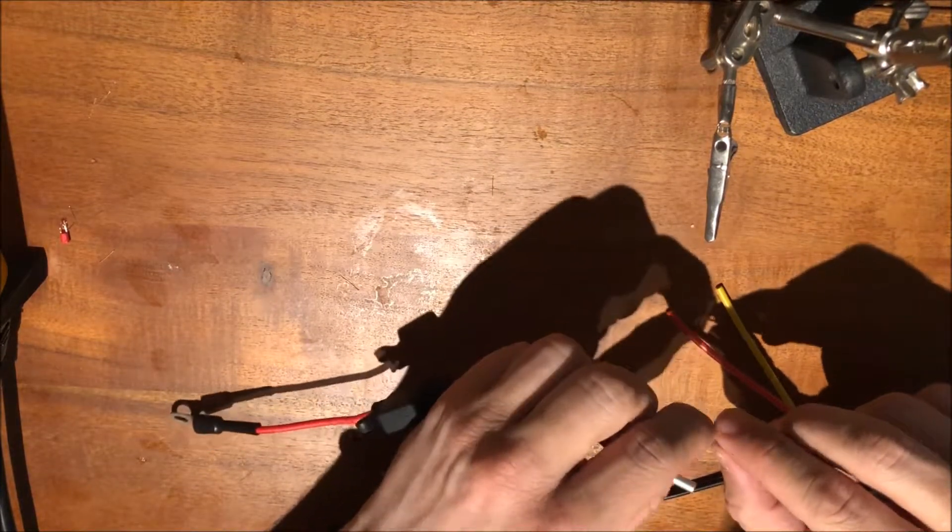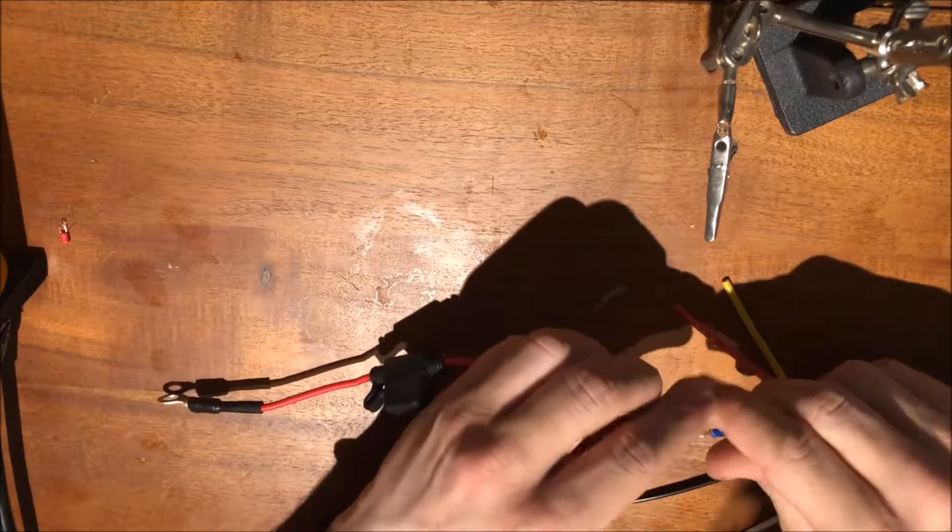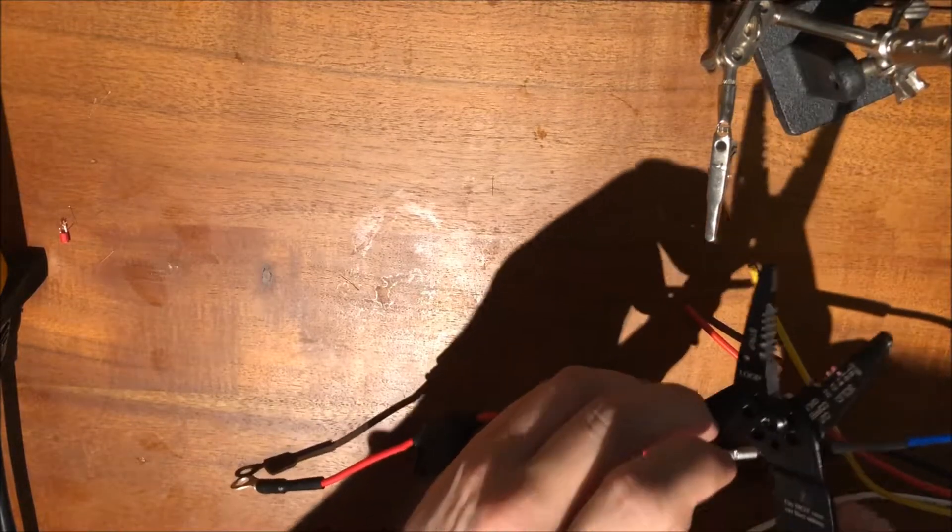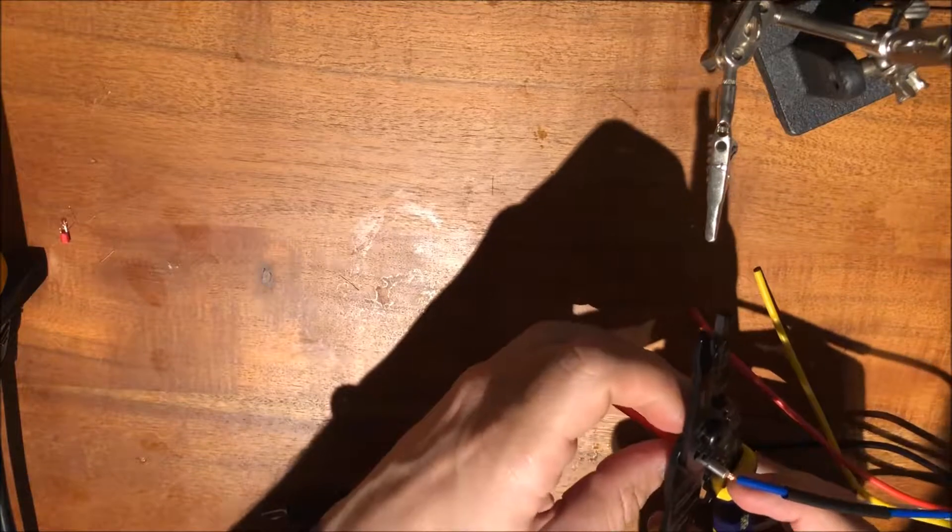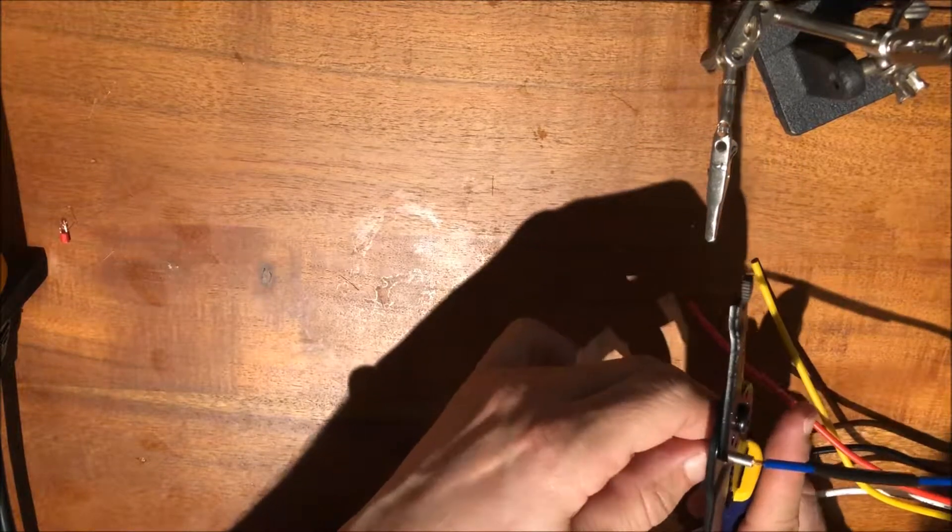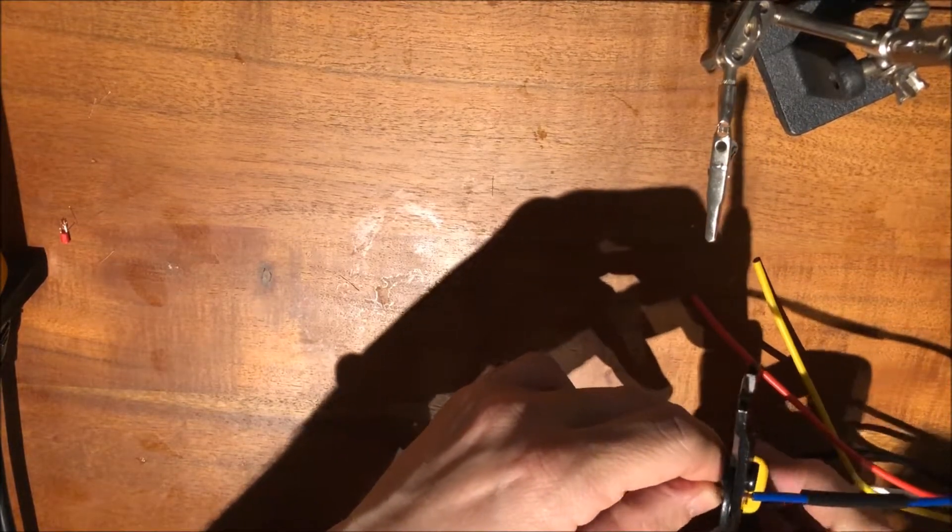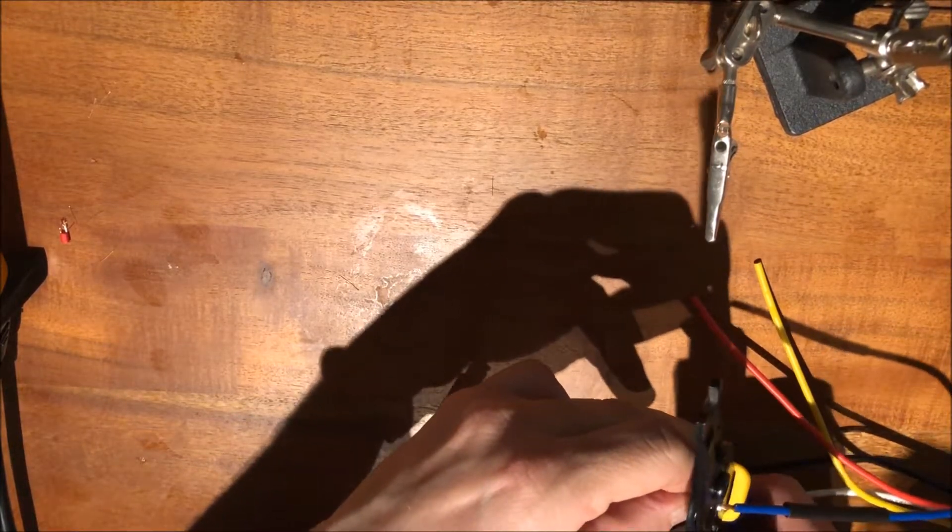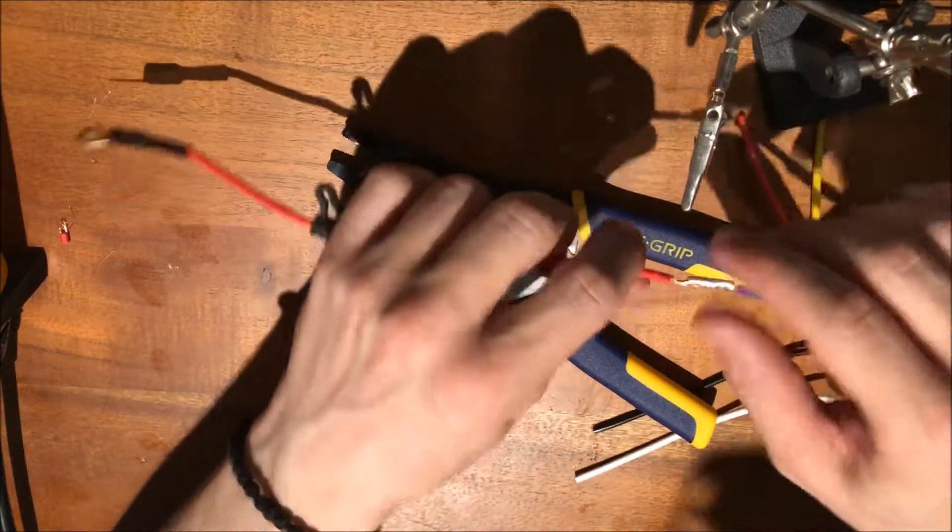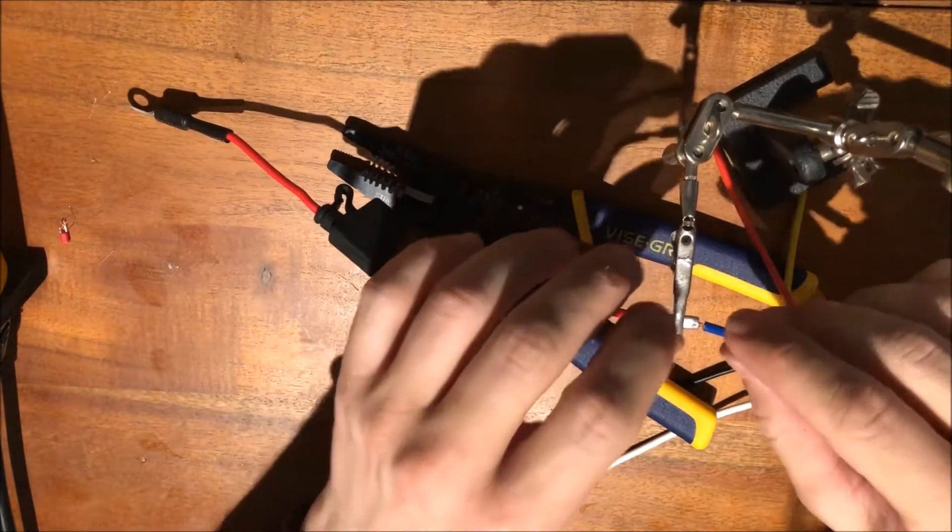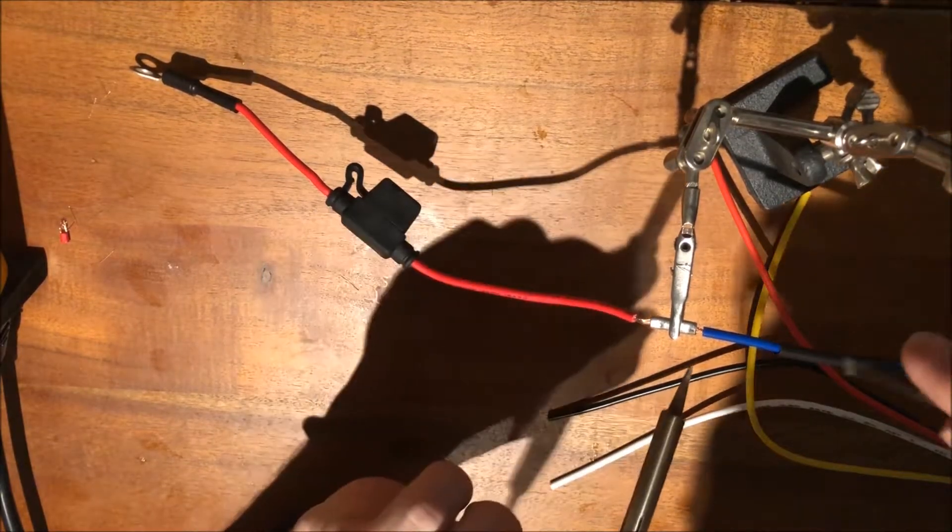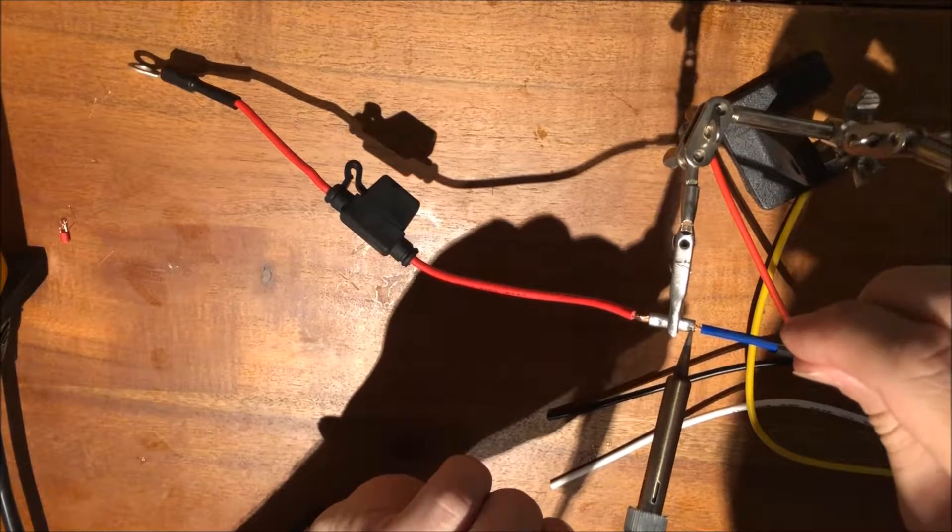This goes into the uninsulated butt connector, and I will crimp it. Just give it a couple crimps here. All right, that's pretty solid. Now as I said, what I'm going to do now is solder that connection shut to make sure that it's really in there.